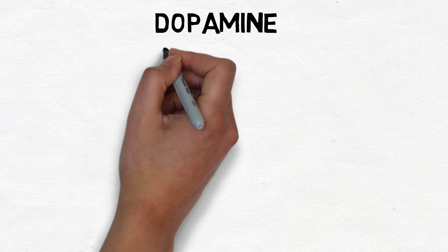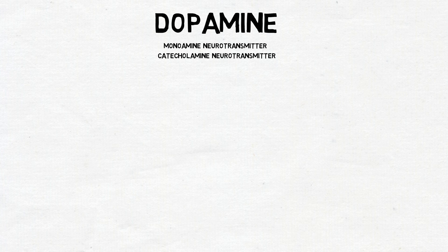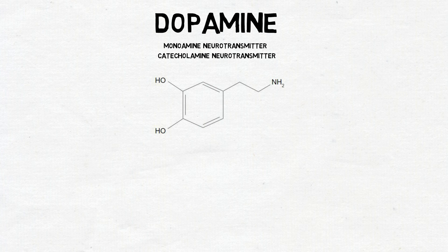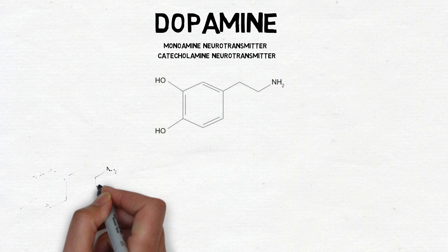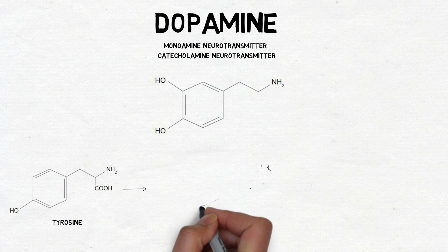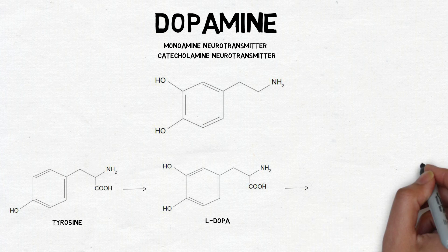Dopamine is a monoamine neurotransmitter, a term that refers to its chemical structure and the fact that it is derived from an amino acid. Dopamine is also a catecholamine, a term that also refers to its chemical structure and the fact that it contains a catechol nucleus. To synthesize dopamine, the amino acid tyrosine is converted to L-DOPA, then L-DOPA is decarboxylated to form dopamine.